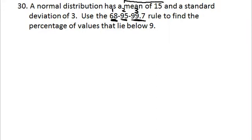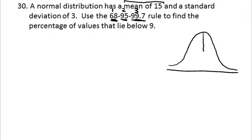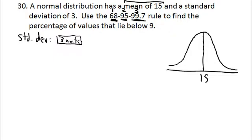The mean is 15. As I'm reading the problem, I'm doing a rough sketch to guide what to do. The standard deviation is 3 — think of it as a ruler, a measuring device that's 3 units long. They want the percentage of values below 9, so put 9 on the sketch and measure the difference between 9 and 15 using that ruler.